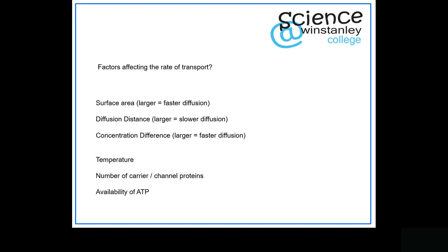Diffusion distance: membranes are very thin, and the thinner it is the faster the diffusion will occur. The larger the distance, the slower it will occur. This can apply to the membrane of a cell or even a structure like the alveoli in the lungs. If the alveoli become damaged they can become scarred and thickened, making the distance larger and slowing the rate of diffusion.